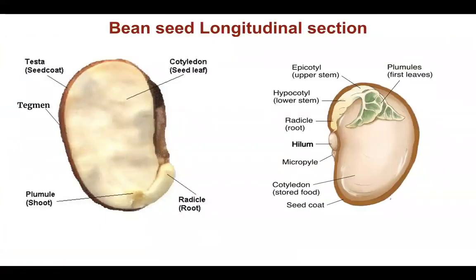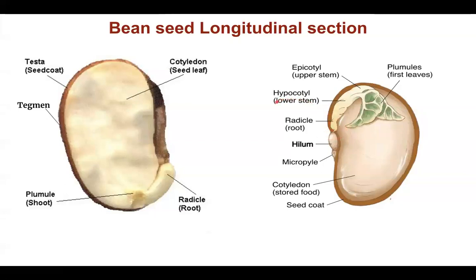In a longitudinal section of a germinating bean seed — soaked in water overnight — you can see the radicle and the plumule. The region between the plumule and the cotyledon is called the epicotyl. The region between the cotyledon and the radicle is called the hypocotyl. If the epicotyl elongates, the cotyledons will not come above soil; if the hypocotyl elongates, the cotyledon gets a chance to come above soil — determining whether germination is epigeal or hypogeal.